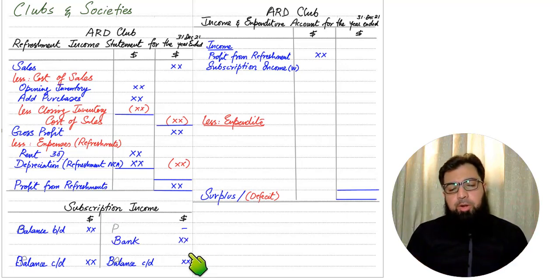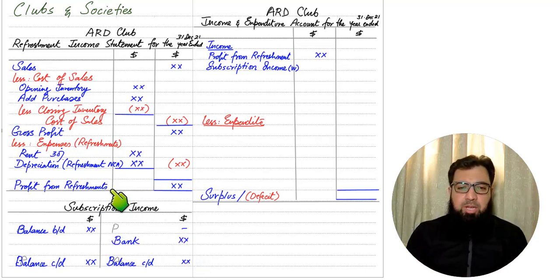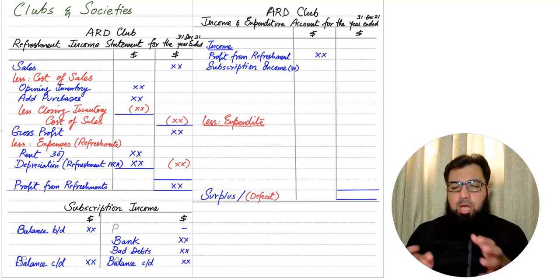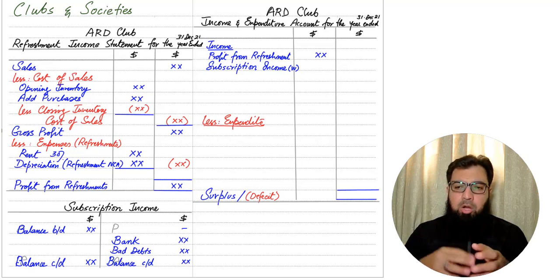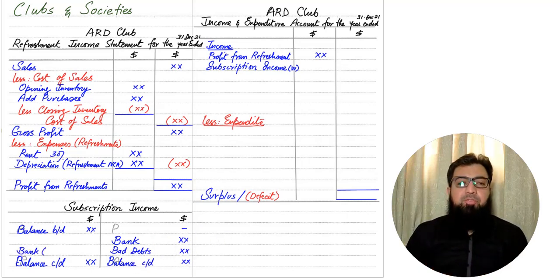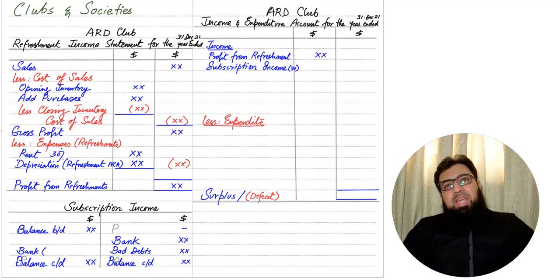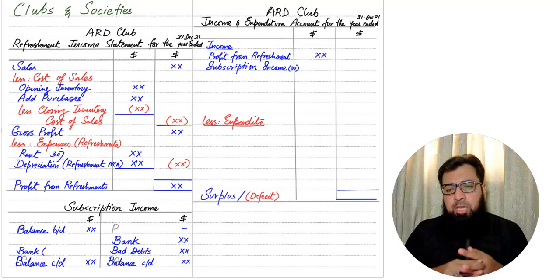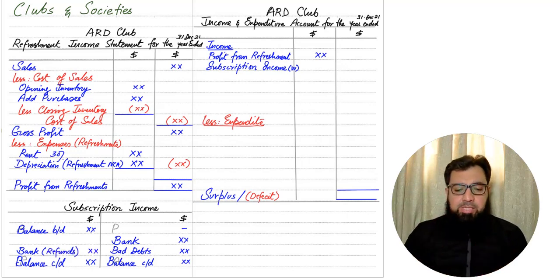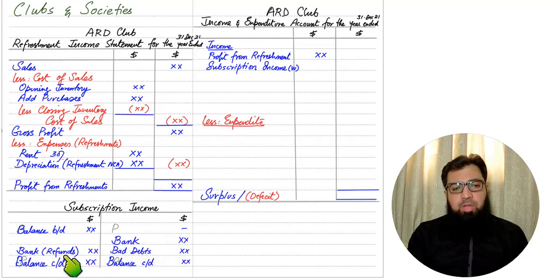Whenever we receive money from members, bank is debited and the subscription account is credited — bank is an asset that increases on the debit side, and subscription income increases on the credit side. If members are unable to pay the amount they owe, this is a bad debt or irrecoverable debt — the entry is to debit bad/irrecoverable debt and credit the subscription account. If we are refunding an amount to members who have overpaid or are leaving the club, bank or cash is credited and the subscription account is debited. We label this entry 'refund' to distinguish it.